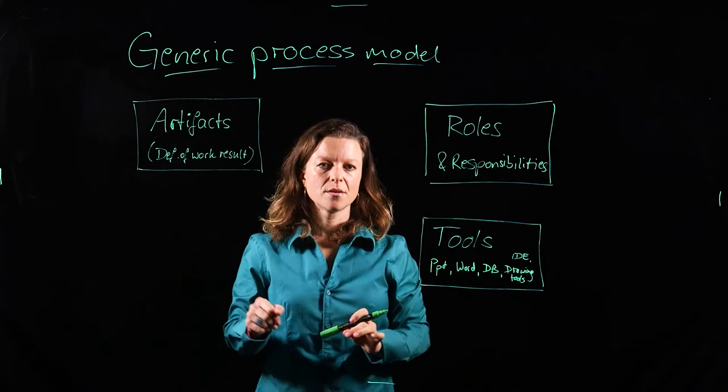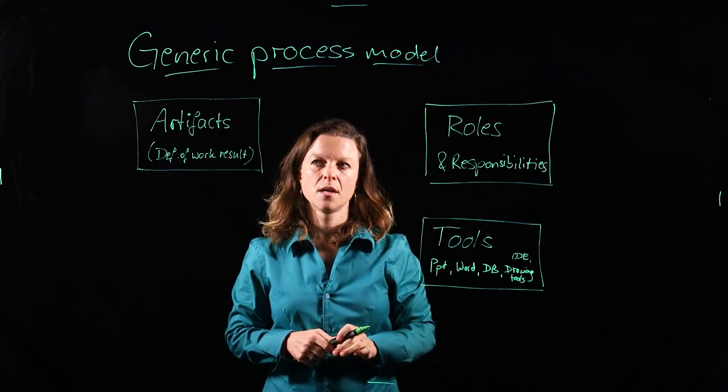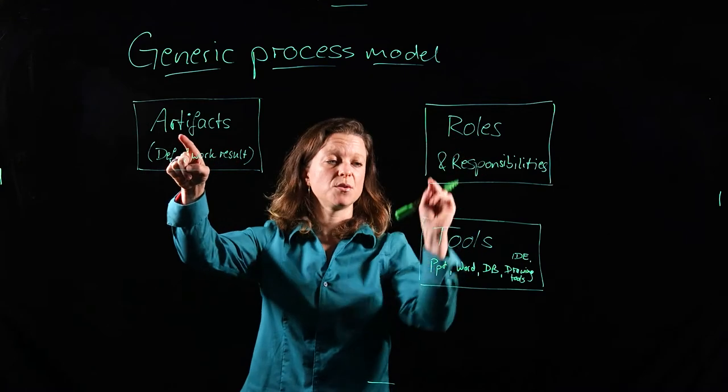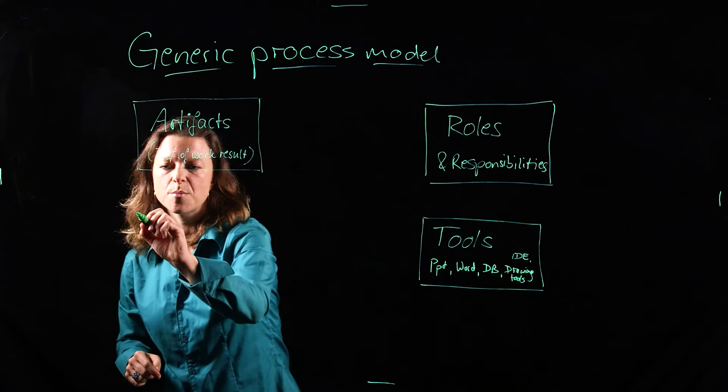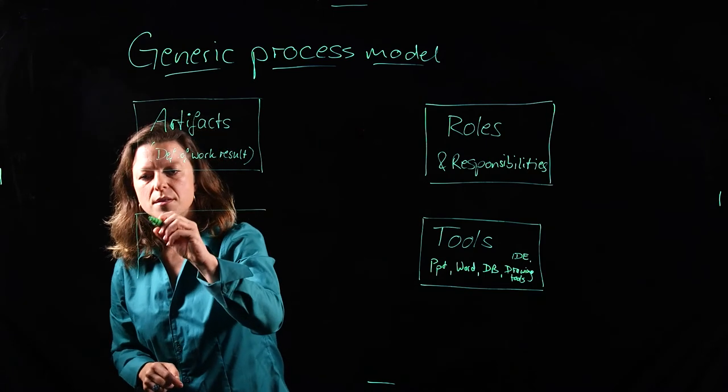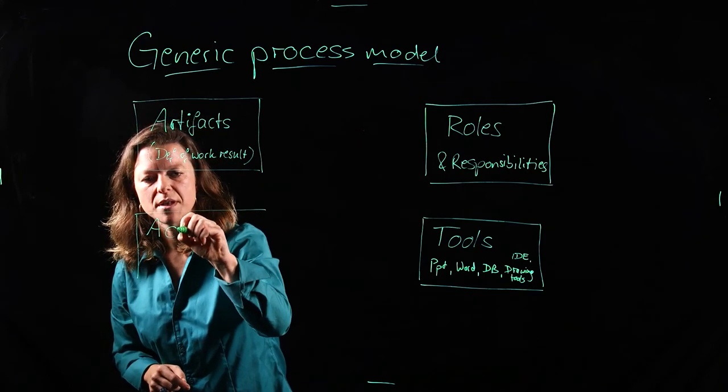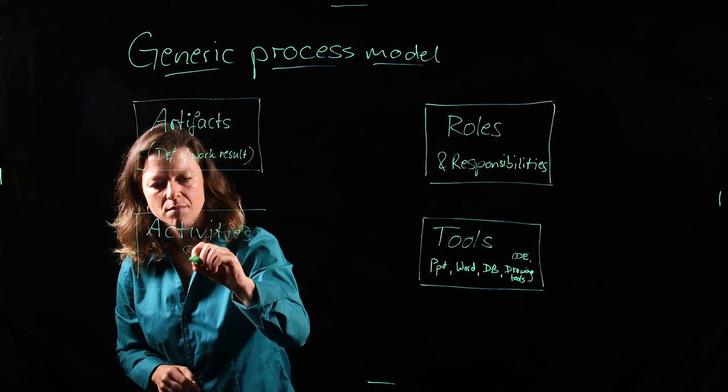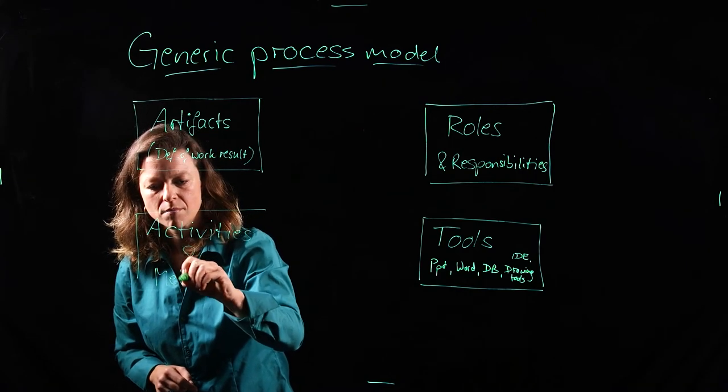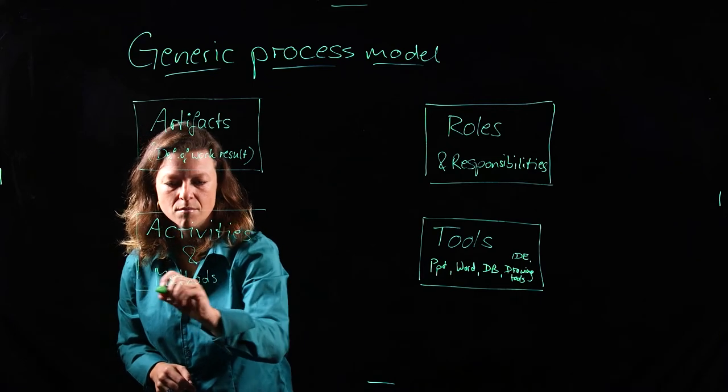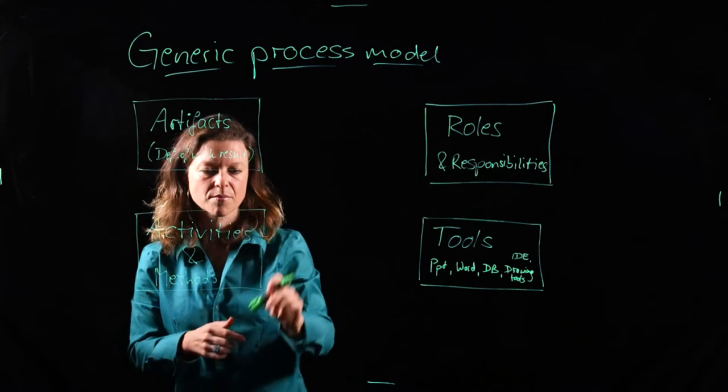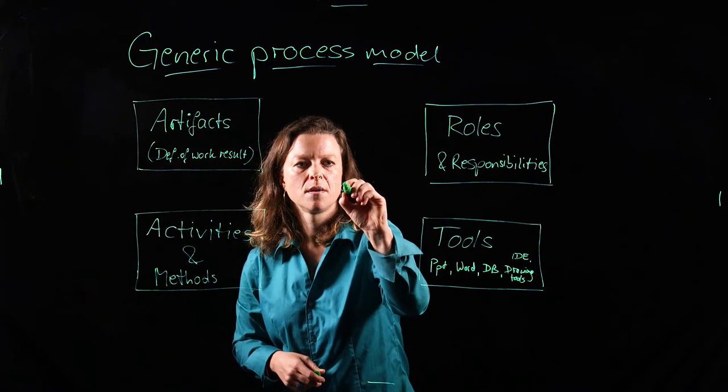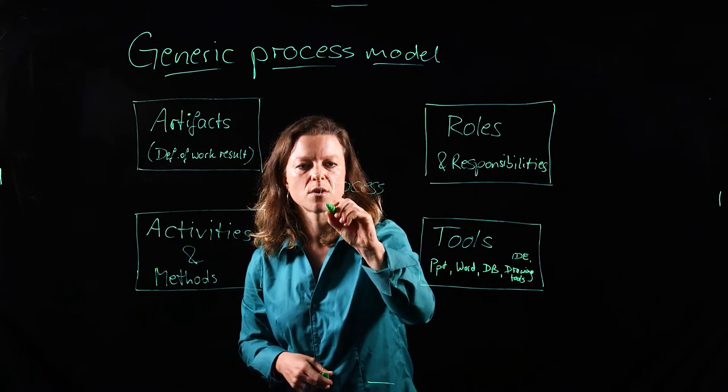The fourth block is how are these people going to develop this using that? So the first part is the activities or methods. The third block is how are we going to develop this? And what we get at the center is a process model.